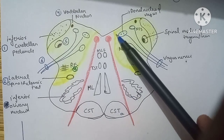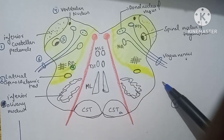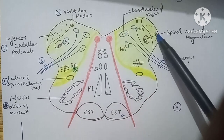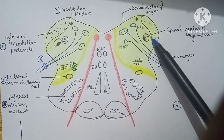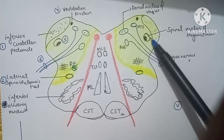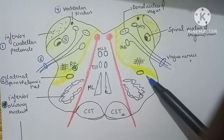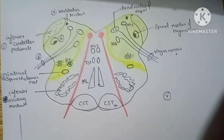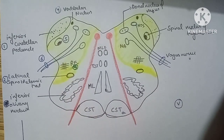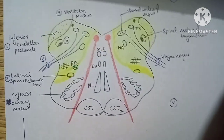The dorsolateral part of the medulla has manifestations because of six structures: the inferior cerebellar peduncle, the dorsal nucleus of vagus, the spinal nucleus of the trigeminal nerve, the reticular formation, the lateral spinothalamic tract, and the vagus nerve. Let's now understand Wallenberg syndrome.